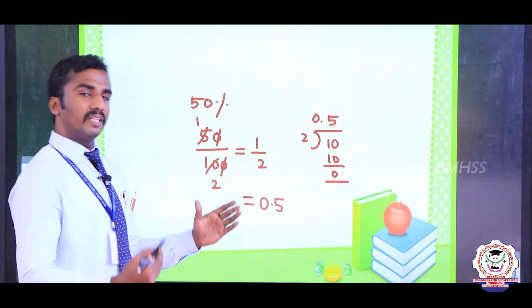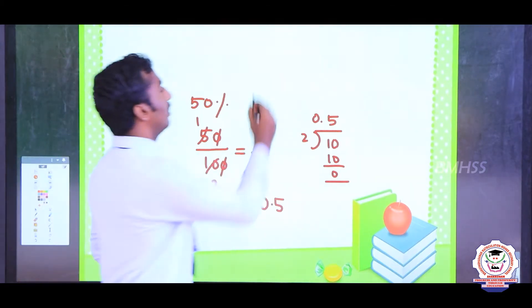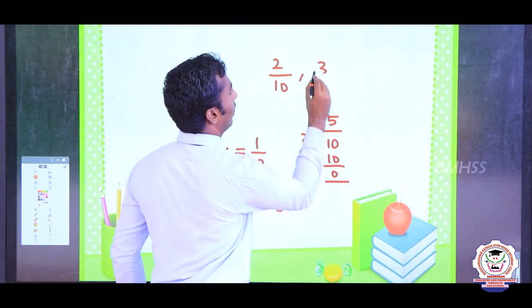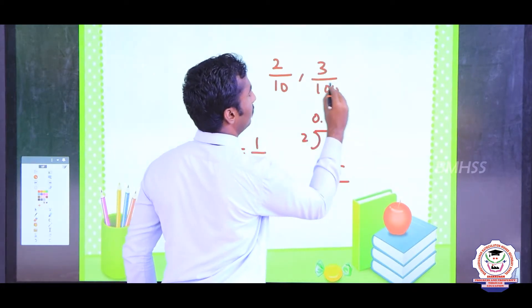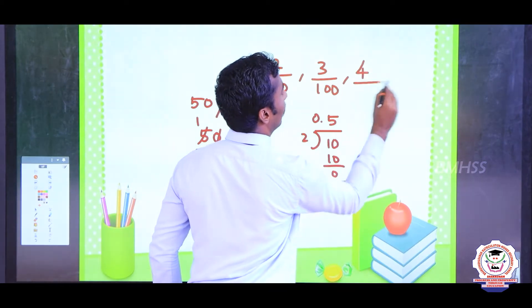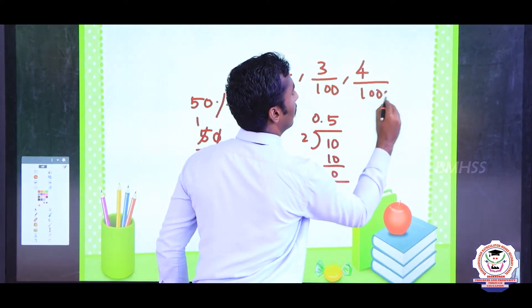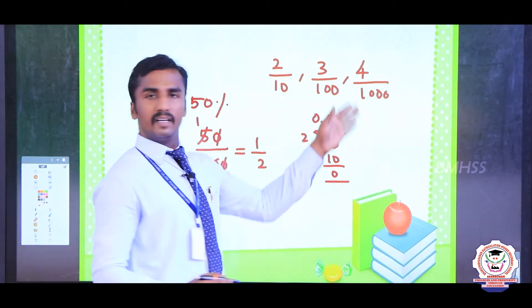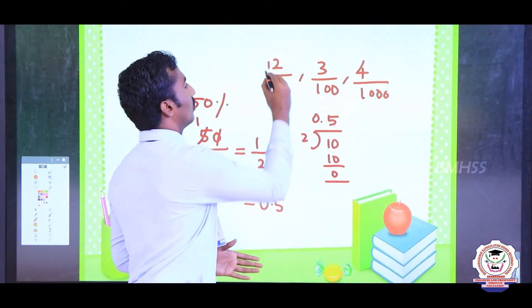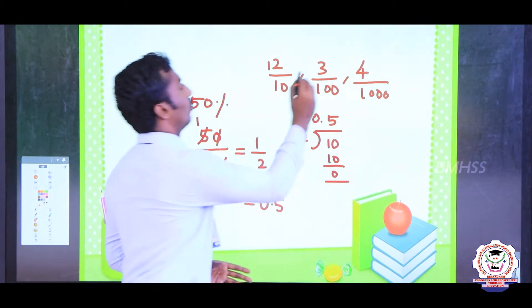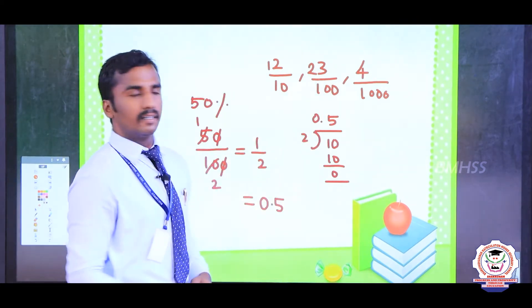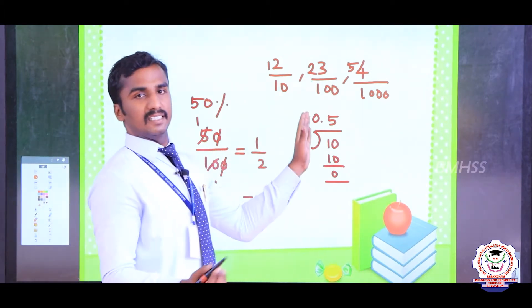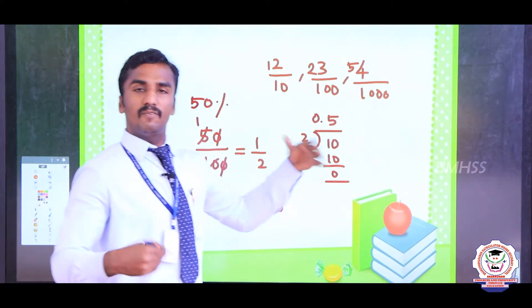Decimal fraction — we know already. A decimal fraction has denominators like 2 by 10, 3 by 100, 4 by 1000, or 12 by 10, 23 by 100, 54 by 1000. These are the examples of decimal fraction.